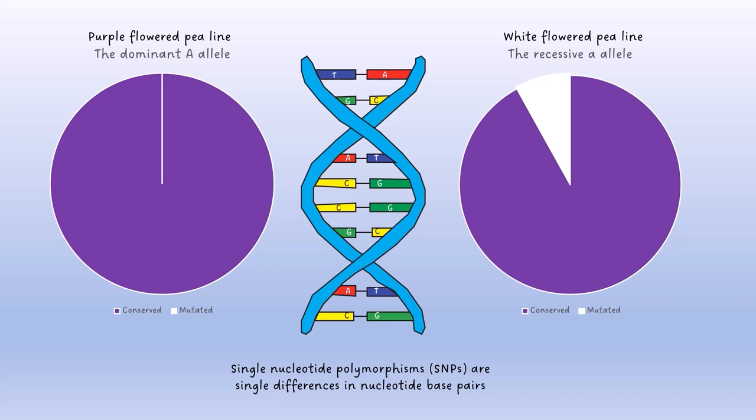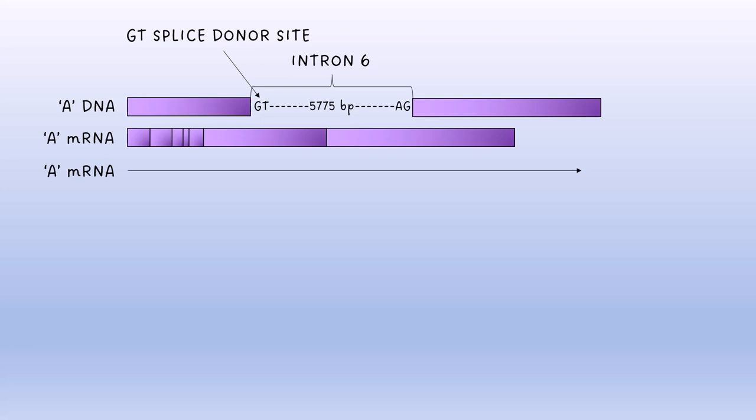Out of the 16 SNPs, only one silent mutation in the GT splice donor site was found exclusively on white flowered pea, indicating it could be responsible for white flower color. This mutation generated a mispliced transcript.